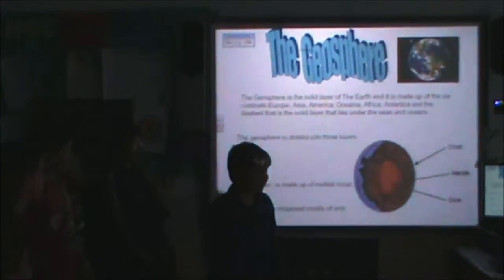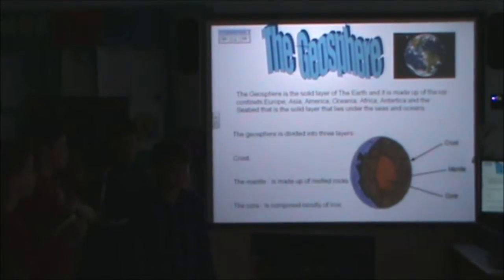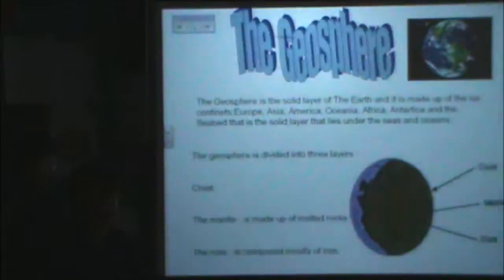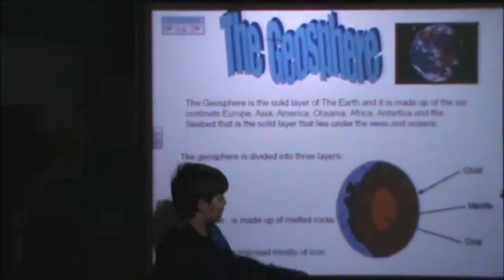The geosphere is the solid layer of the Earth, and it is made up of the six continents and the seabed. The seabed is the solid layer that lies under the sea, and it is divided into three different layers.